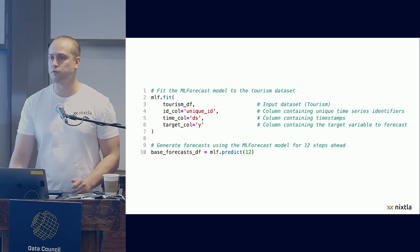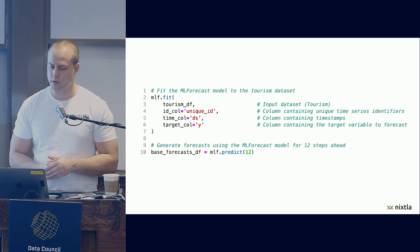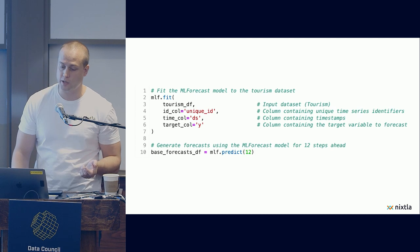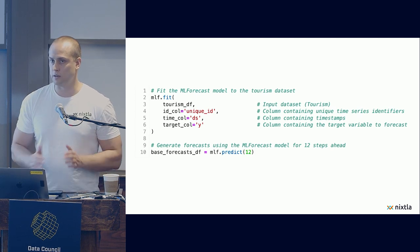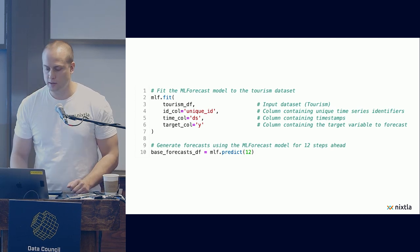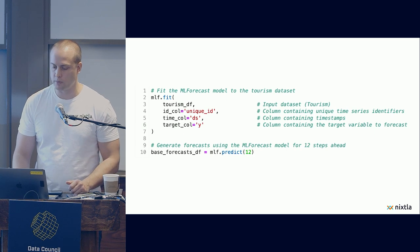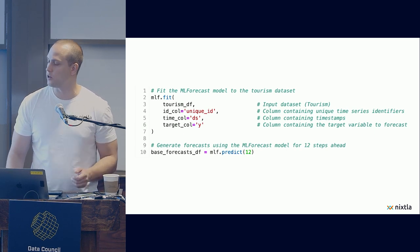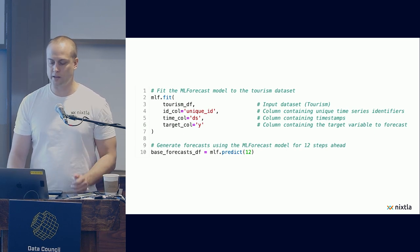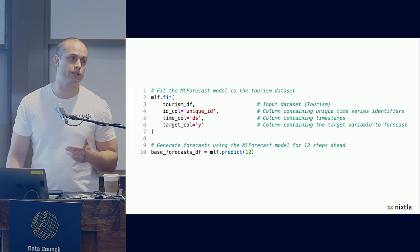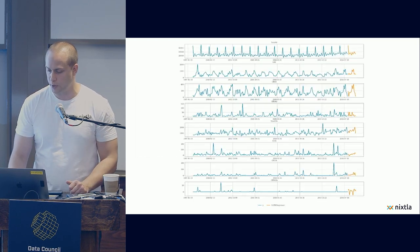Then to fit and forecast, you simply call the fit method, specifying the data frame that you're using, the ID, and here you can have as many series as you want, the time column, the target column, and if you have exogenous variables, you can include them too, and then predict the next 12 observations that is the next year by calling the predict method.